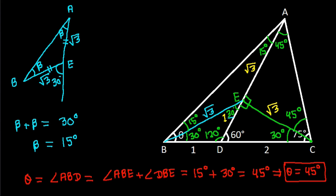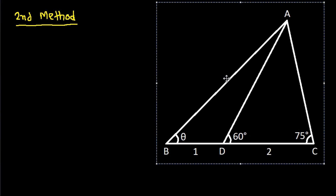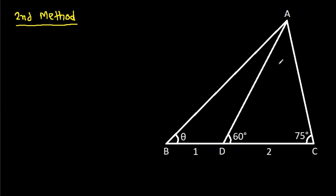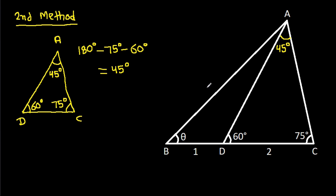And the second method: in angle ACD, this angle is 60 degrees and this angle is 75 degrees, so this angle will be 180 minus 75 minus 60 degrees, that will be 45 degrees. This angle will be 45 degrees.